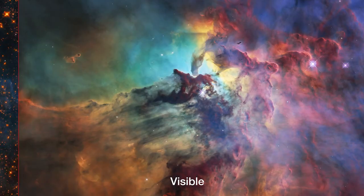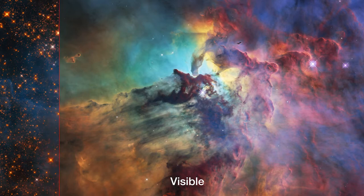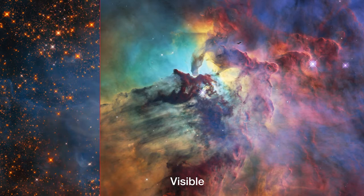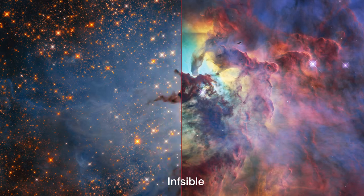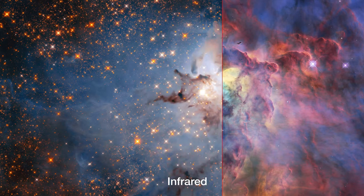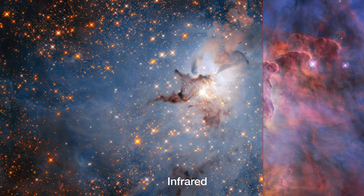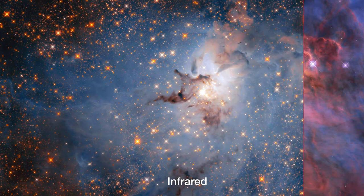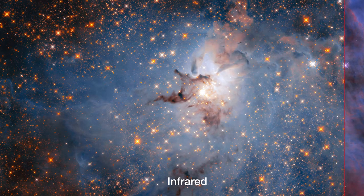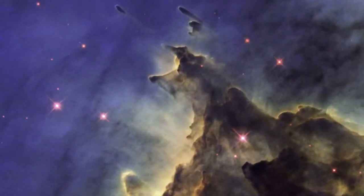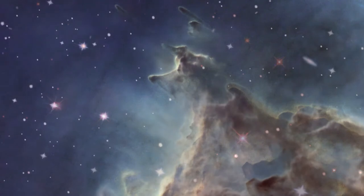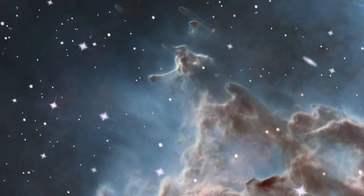For example, Hubble's images taken in the infrared typically reveal more stars than images taken in visible light, as infrared radiation passes more freely through cosmic dust, which scatters the bluer visible light. This allows astronomers to see regions of space that are normally obscured by cosmic dust and gas.